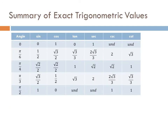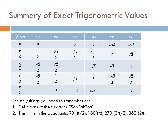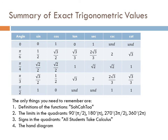Here is a summary of all the exact trig values you could possibly get. You don't need to memorize all of this. All you really need to remember is the definitions of the functions — SOH CAH TOA — the limits of the quadrants (90°/pi/2, 180°/pi, 270°/3pi/2, 360°/2pi), the signs in the quadrants using 'all students take calculus,' and the hand diagram. If you understand how to use these four things, you should be good to go.